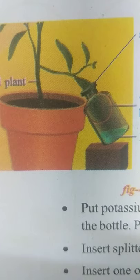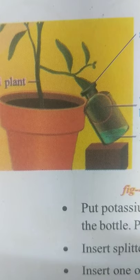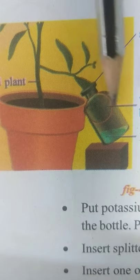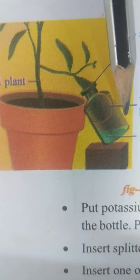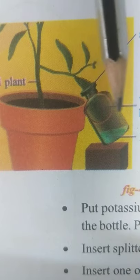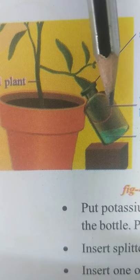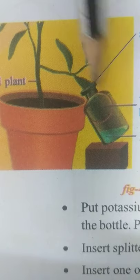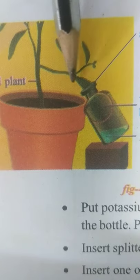Let us move to the procedure of this experiment. Take a healthy potted plant, select a healthy long leaf, and take a splitted cork. Insert the long leaf into the splitted cork — 50% of the leaf should be outside and 50% of the leaf should be inside, and the cork is fixed to the bottle. So, 50% of the leaf is inside the bottle and another 50% of the leaf will be outside.